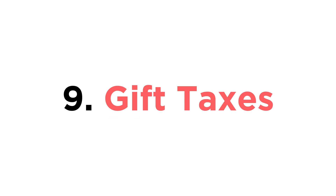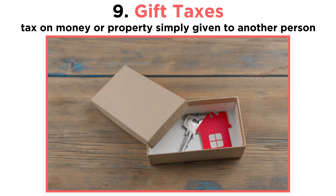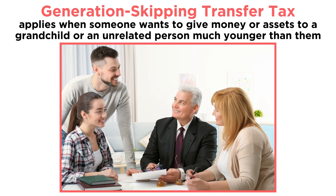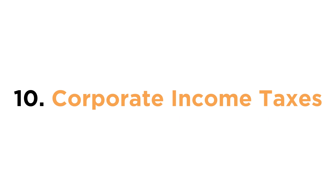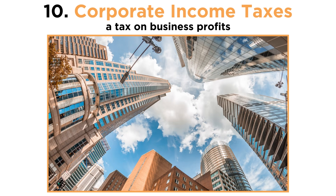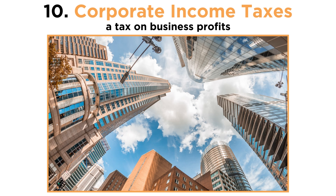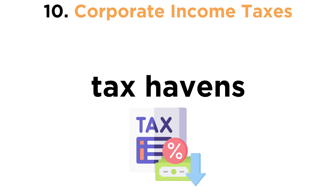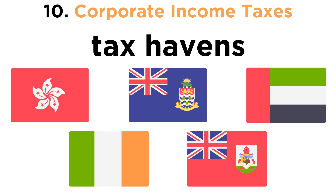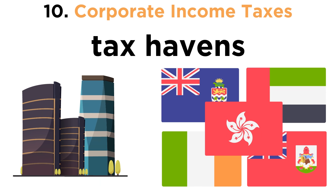Number nine: gift taxes. A gift tax is a tax on money or property simply given to another person. Related to the gift tax is the generation-skipping transfer tax, when someone wants to give money or assets to a grandchild or an unrelated person much younger than them. Number ten: corporate income taxes. A corporate income tax, otherwise known as simply a corporate tax, is a tax on business profits. Typically corporate tax rates are flat. Corporate taxes indisputably create tax havens, or countries that have either a low or effective 0% corporate tax rate, where companies incorporate headquarters to avoid paying taxes on their annual profits.